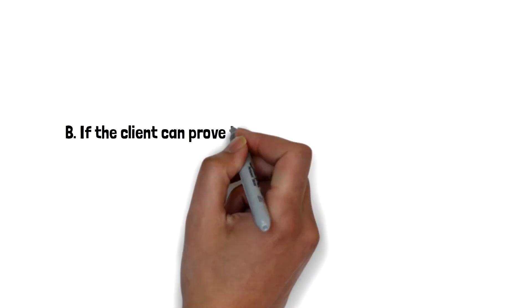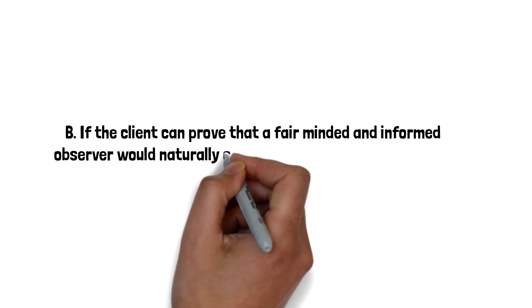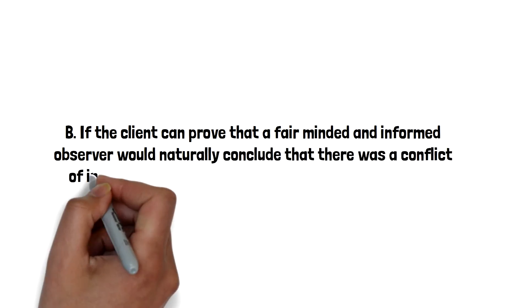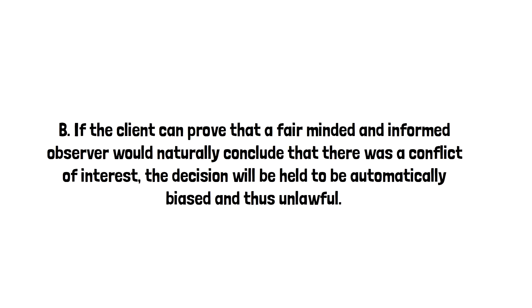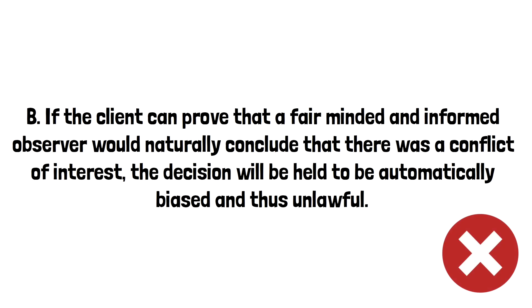Option B: If the client can prove that a fair-minded and informed observer would naturally conclude that there was a conflict of interest, the decision will be held to be automatically biased and thus unlawful. This is wrong because the test as expressed in the case law is as follows: the question is whether the fair-minded and informed observer, having considered the facts, would conclude that there was a real possibility that the tribunal was biased. So the test is not whether there is a conflict of interest, but rather whether there was a real possibility of bias.